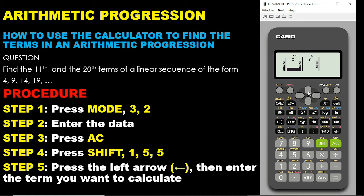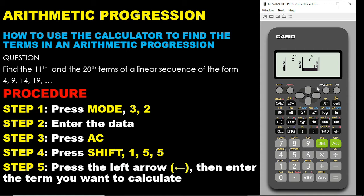When you are done entering the X values, use the top arrow to go up. When you get to the first term, move to where Y is by using the left arrow on your calculator. The first term's corresponding value is 4, so you press 4 and click equals. The second term is 9, so you press 9 and press equals. The third term is 14, so you press 14 and then press equals. It is important to note that any value you enter on the calculator automatically gets saved.